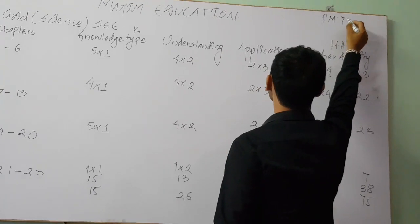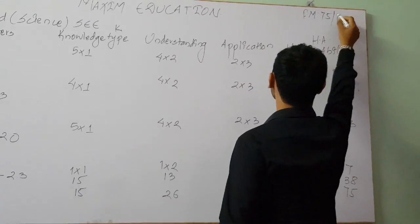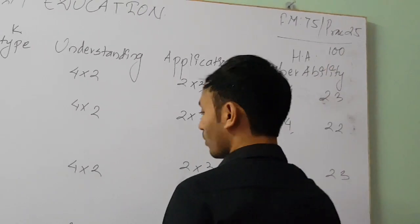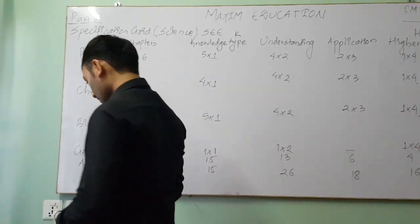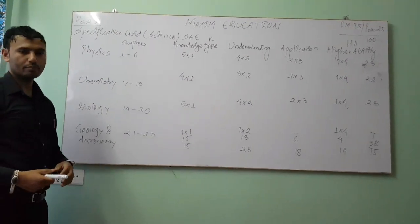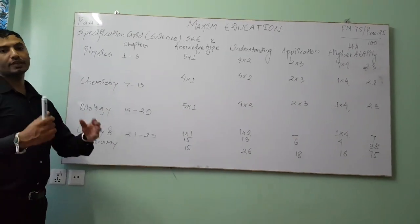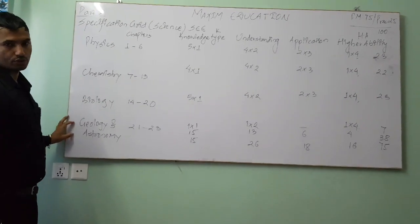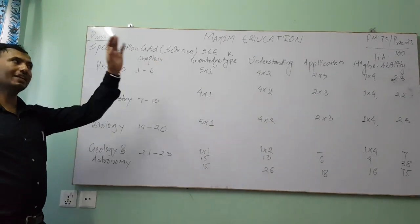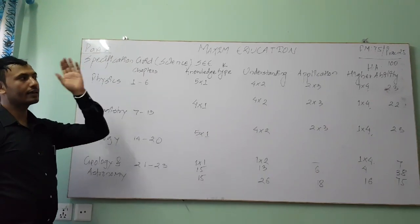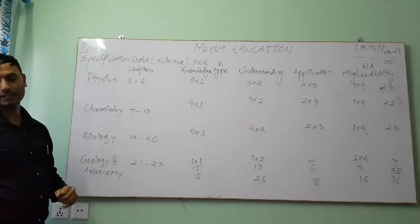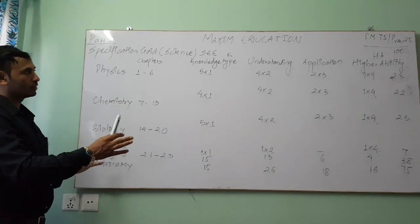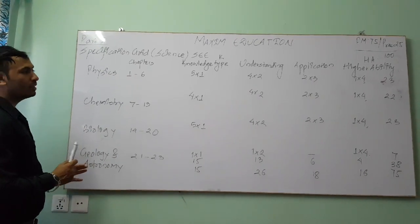So altogether the theory exam carries 75 marks, and you will get 25 marks as practical, making the total marks for science 100. The practical marks are based on the practical coursework you carry out in physics, chemistry, biology, geology, and astronomy. This practical component of 25 marks applies in your board exam, terminal examination, or internal exam, as classified by the Curriculum Development Centre of Nepal.